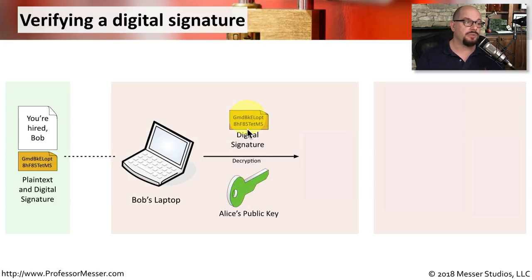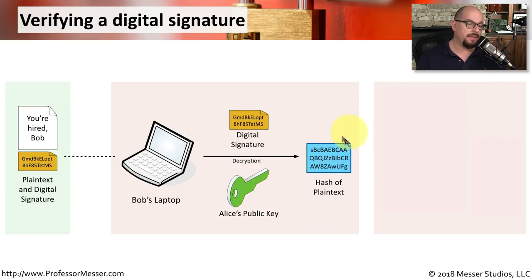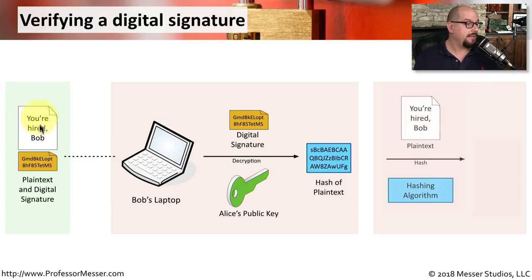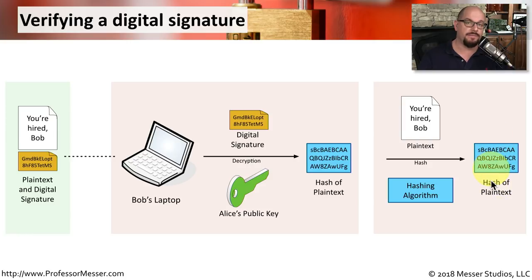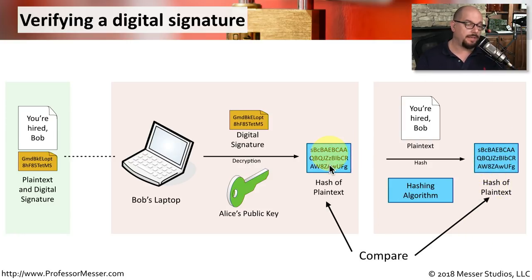Bob takes the digital signature off of the plain text and decrypts it using Alice's public key, which provides the original hash that Alice created. Bob then takes the same plain text, performs the same hashing function Alice originally did, and produces his own hash of that plain text. Bob can now compare the hash from the decrypted digital signature with the hash he computed himself. If those two match, he knows that the digital signature is valid.